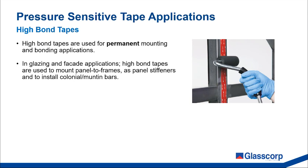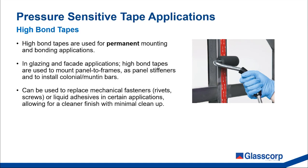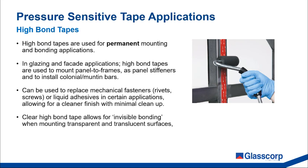High bond tapes are used in several different glazing and facade applications, including mounting panels to frames, as panel stiffeners, and to install colonial mounting bars and decorative features. High bond tapes can replace mechanical fasteners or liquid adhesives, allowing for simpler application, a cleaner finish, and minimal cleanup. We have clear high bond tapes which allow for invisible mounting — useful when mounting transparent and translucent substrates.